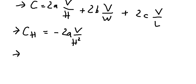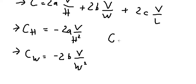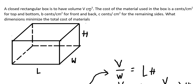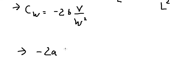Similarly for the next terms. To find the minimum total cost, we set the first derivative with respect to H equal to zero. We have negative 2a multiplied by V over H squared equals zero. As you can see, the coefficients are constants, so there is no unique value for H from this equation alone.